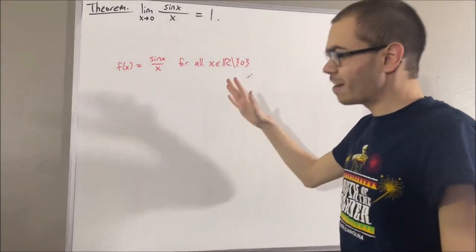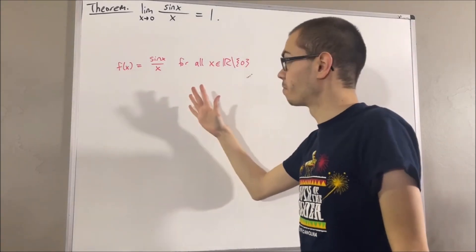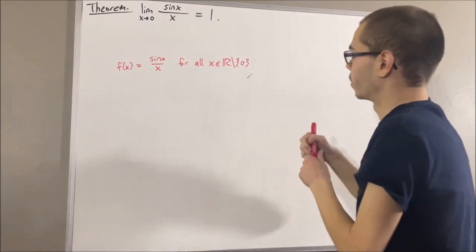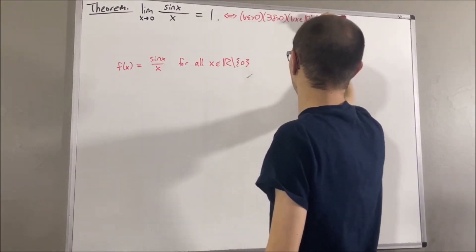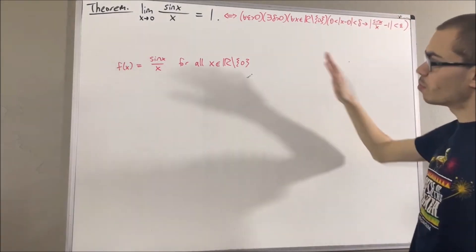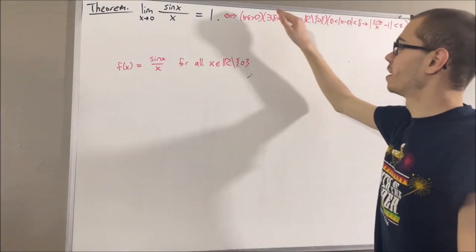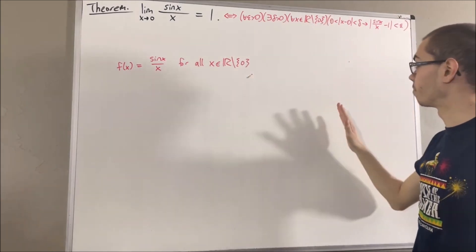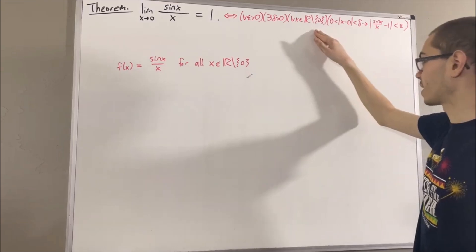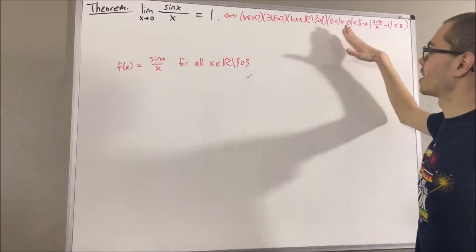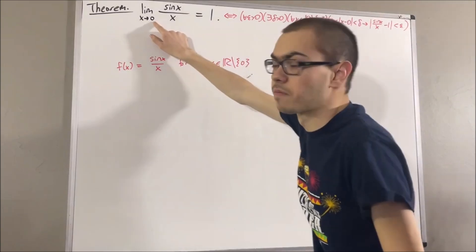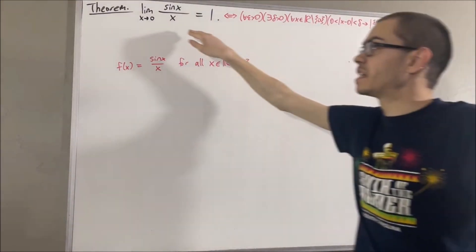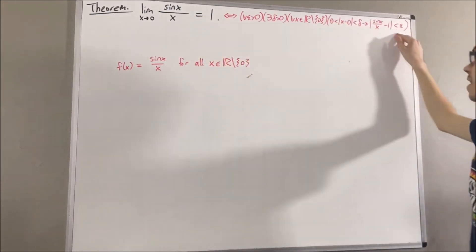By definition of the limit of a function, the limit as x approaches 0 of sine x over x equals 1 means the following: for every epsilon greater than 0, there exists a delta greater than 0, such that for all x in the domain — so for all non-zero x — if 0 < |x − 0| < delta, then |sine x over x − 1| < epsilon.